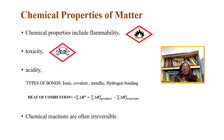Heat of combustion affects it: H equals delta H of products minus delta H of reactants — it has changed at the end. Chemical reactions are often irreversible. For example, when we burn wood, it undergoes chemical transformation and turns into ashes; ashes cannot be converted back to wood.